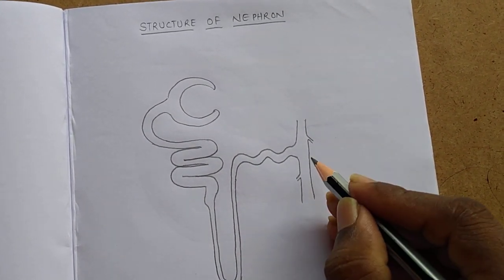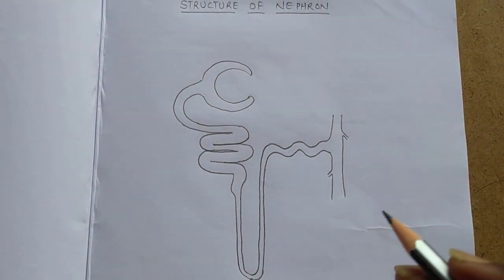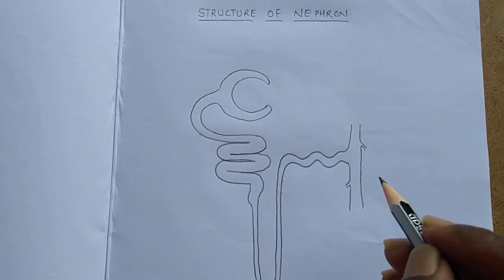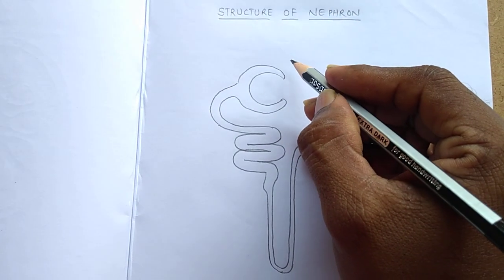And this one is the collecting duct. After this, we have to draw the blood vessels.